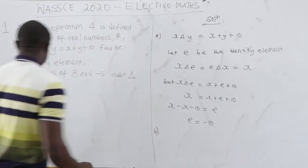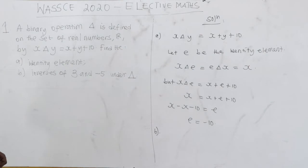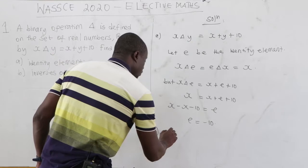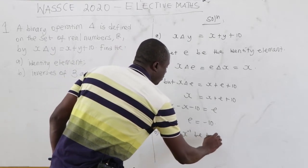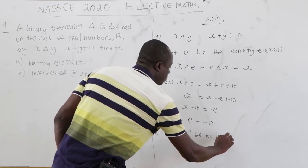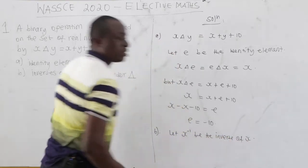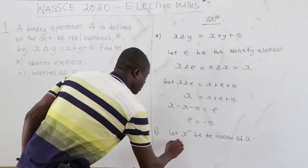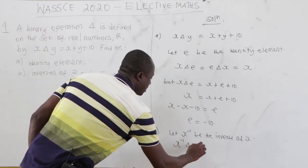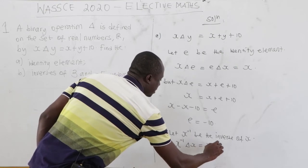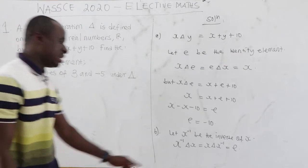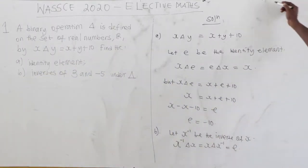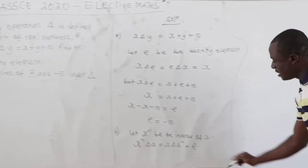Now let's see the second part: find the inverses of 3 and negative 5 under delta. Let x-inverse be the inverse of x. From definition, we know that x-inverse delta x is the same as x delta x-inverse, and this should equal the identity element.